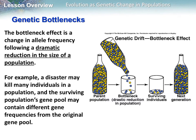The bottleneck effect is a change in allele frequency following a dramatic reduction in the size of a population. Following some sort of natural disaster, many individuals are killed off, and the population's gene pool may contain different gene frequencies from the original. For example, starting with approximately equal blue and yellow individuals, after a bottleneck — a drastic reduction — the surviving individuals have more blue than yellow simply by chance, and subsequent generations then have more blue than yellow, resulting in different allele frequencies.